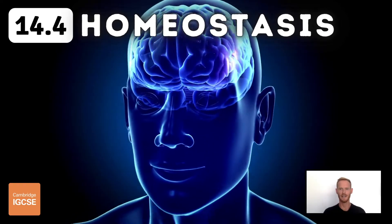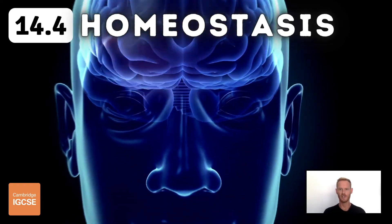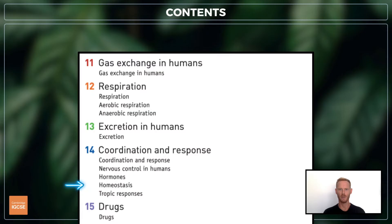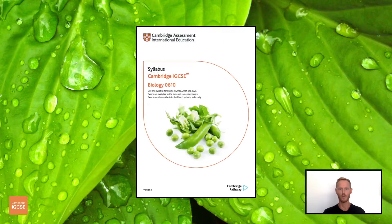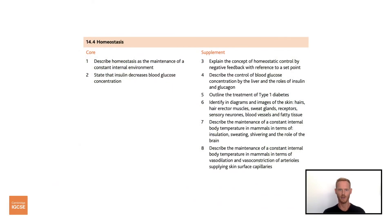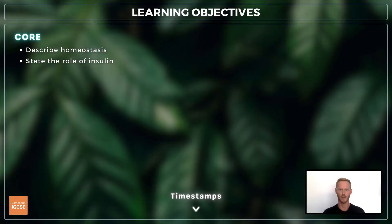Hello and welcome to another complete Cambridge IGCSE biology lesson, where you'll learn absolutely everything you need to know on topic 14.4, homeostasis. As always, we'll be following the Cambridge syllabus exactly and we'll cover absolutely everything you need to know for your final exam. For topic 14.4, you need to describe homeostasis and state the function of insulin.